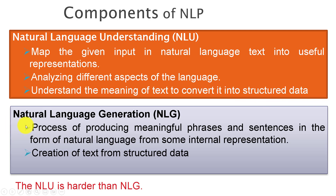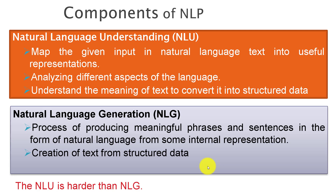Next is Natural Language Generation (NLG). NLG is the process of producing meaningful phrases and sentences in the form of natural language from some internal representation. NLG involves creation of text from structured data. In summary, NLU deals with understanding of natural language text, while NLG includes generation of new text from given data. The literature shows that NLU is harder than NLG.